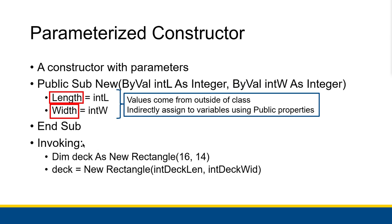Whenever values come from outside the class, as they do with the parameterized constructor, indirectly assign those values to the variables using the public properties — that's very important. You can invoke it by writing 'dim deck as new rectangle' followed by parentheses with the arguments, for example passing in 16 and 14 to assign a length of 16 and width of 14. You can also use variables. Pass by value is preferred here since you don't want to modify those variables inside the constructor.